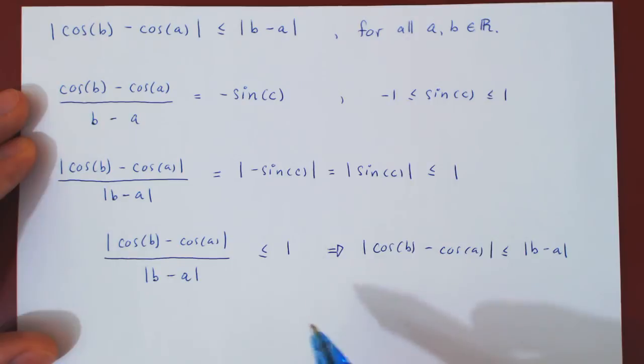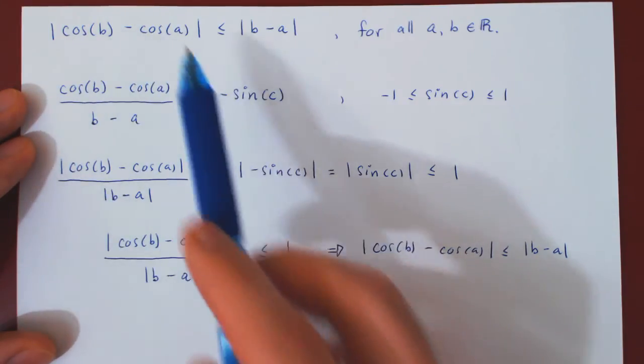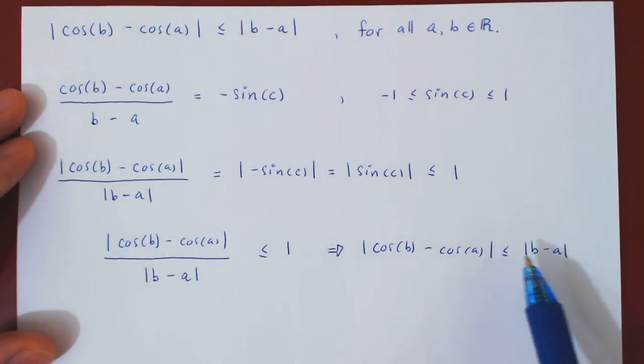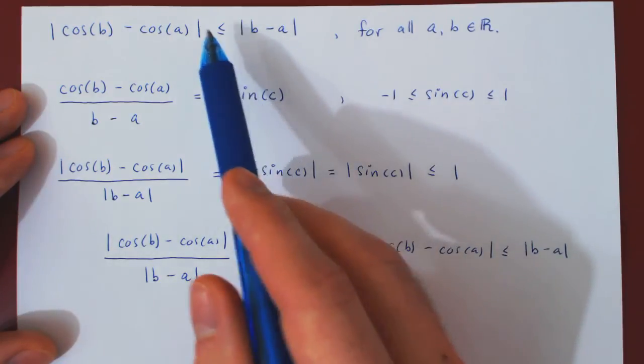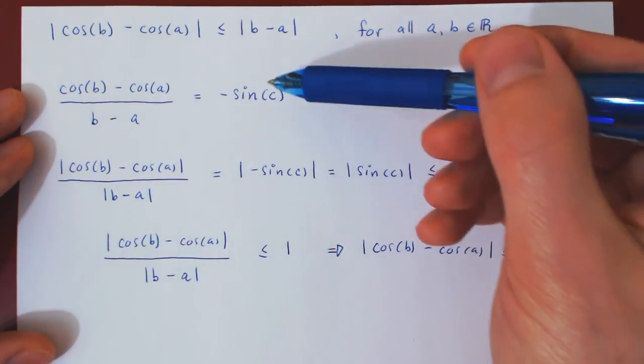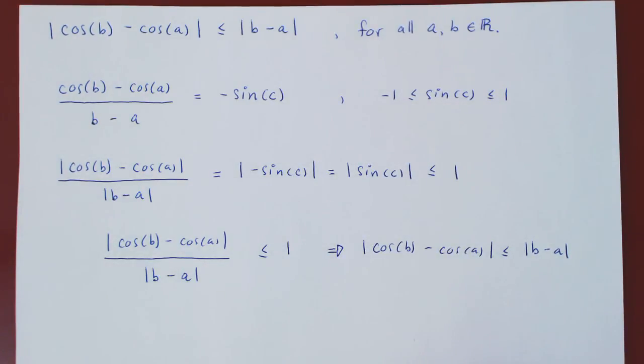And we're done. By the mean value theorem, the absolute value of cos(b) minus cos(a) is always less than or equal to the absolute value of b minus a. So a very nice inequality that was fairly straightforward to prove using the mean value theorem. And that's it.